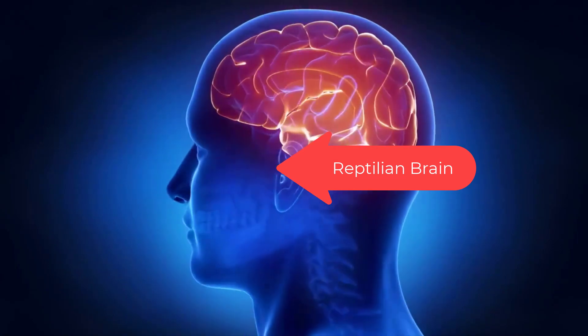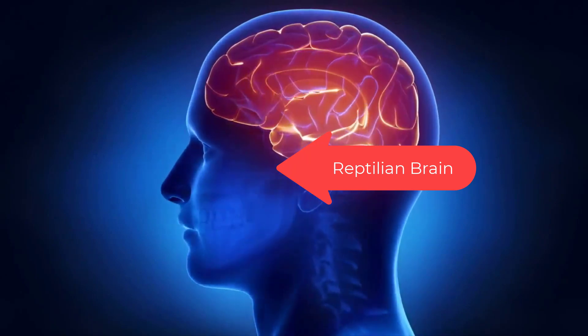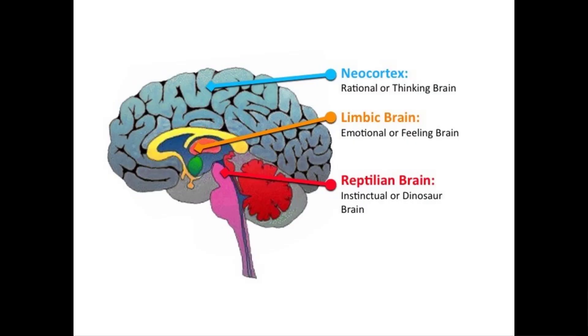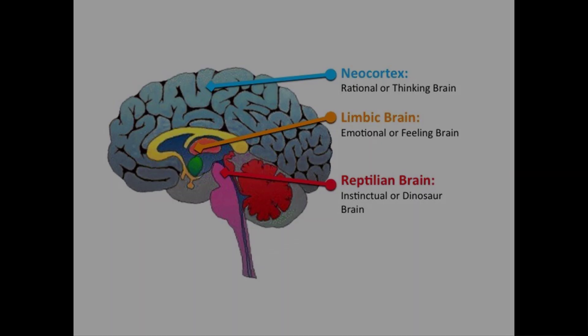The old brain — the reptilian brain — it decides. It can take into account the input from the other brains, but it can also decide faster than the blink of an eye, then use the other brains to justify the decision. The reptilian brain is visual and hardwired into the brain stem.